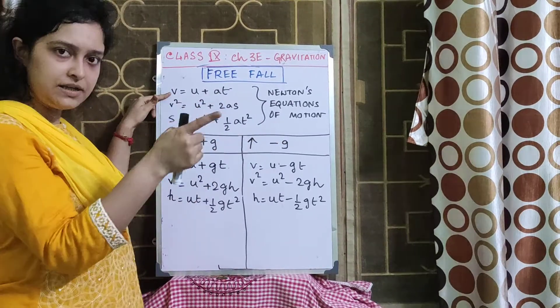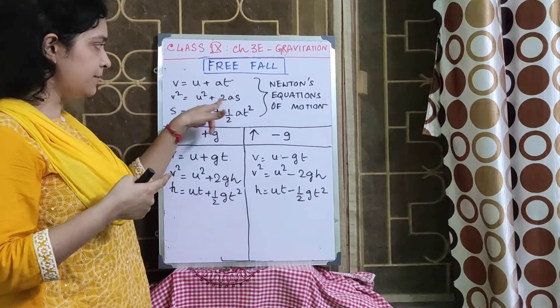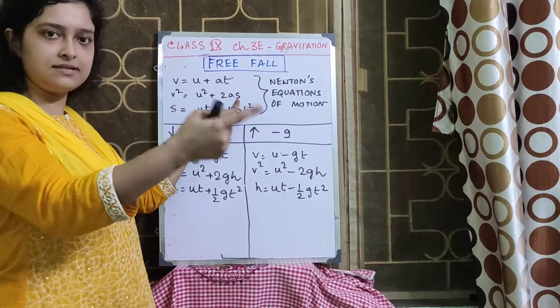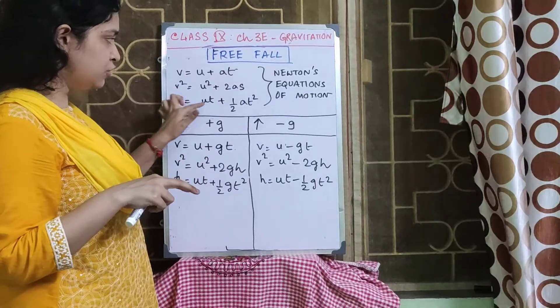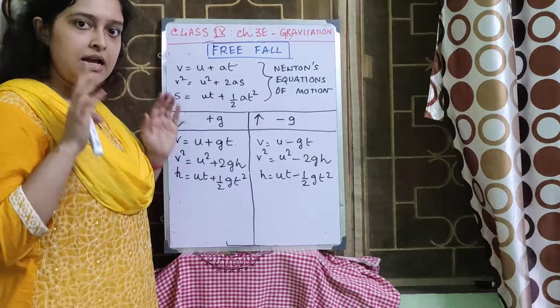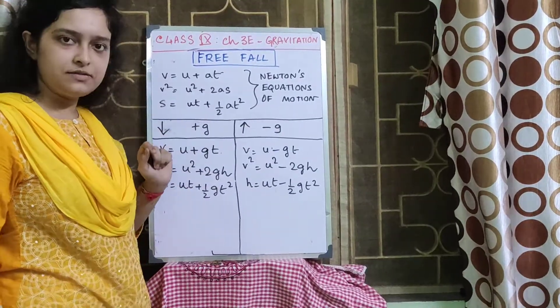Force is being applied. It has been accelerated by acceleration A in time T. Final velocity at time T is V. Similarly, we have other 2 equations: V square equal to U square plus 2AS. What is S? The distance covered.